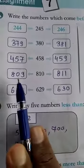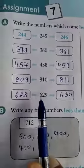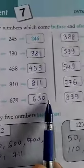810. Before is 809 and after is 811. 629. Before is 628, after is 630.